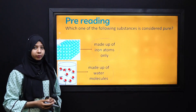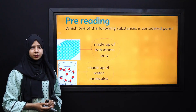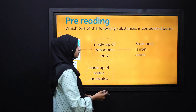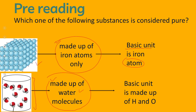What's the difference between them? The difference lies in their basic unit. If we keep dividing this substance further, it ends up in iron atoms, whereas if we keep dividing the other unit, it ends up in two atoms — first one is hydrogen and the second one is oxygen.